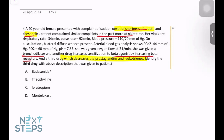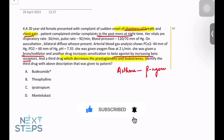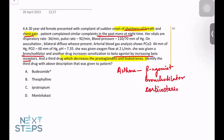For asthma treatment, you give a beta agonist as a bronchodilator. The second drug increases sensitization to beta agonists by increasing the beta receptors. The third drug is a corticosteroid, whose mechanism of action includes inhibiting the synthesis of cytokines.